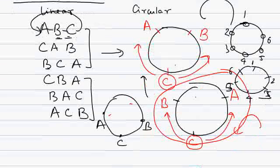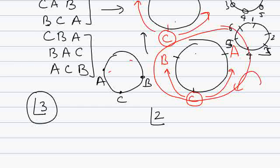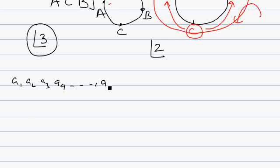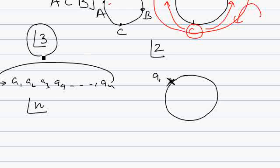So in circular permutation the answer is 2 factorial, whereas in linear permutation it is 3 factorial. In general, for n objects a1, a2, ..., an arranged in a line, the answer is n factorial. For circular permutation, the key concept is that there is no starting point — when you finish at a_n you are back at a1, which is not the case in linear permutation.